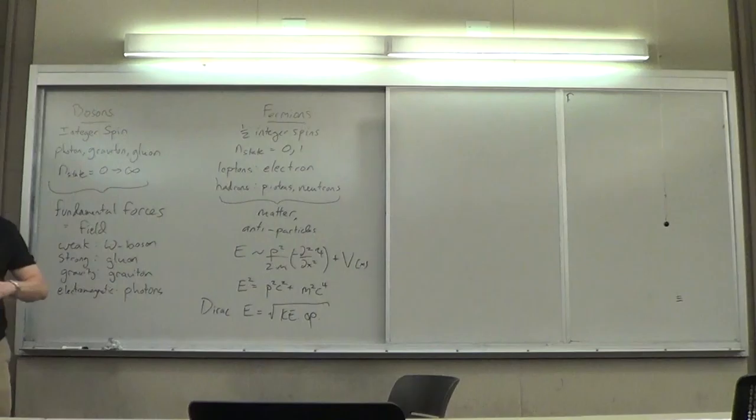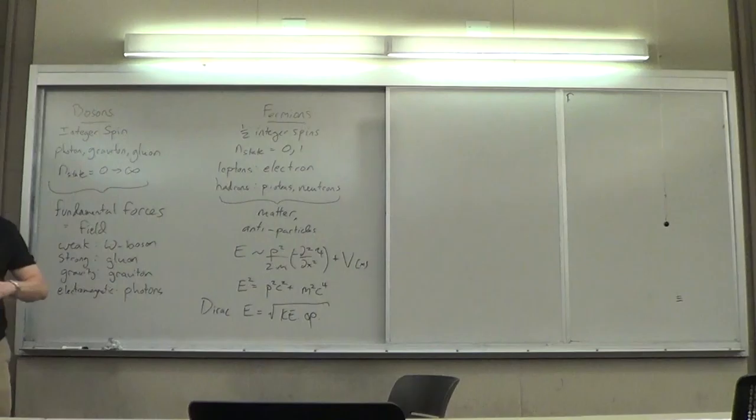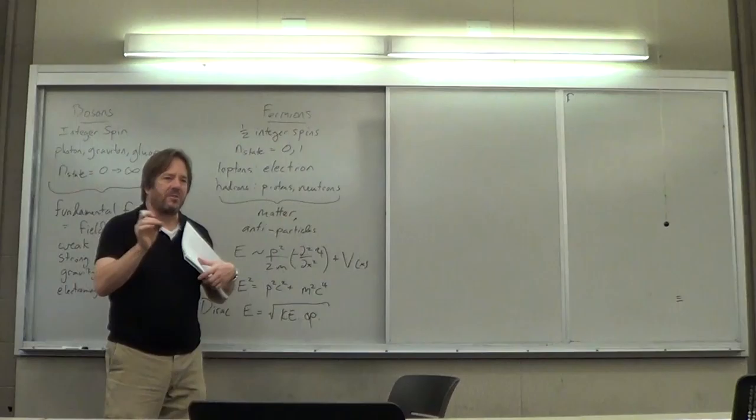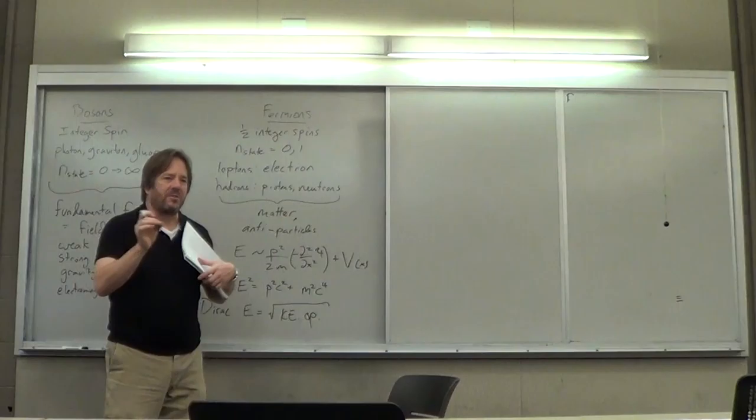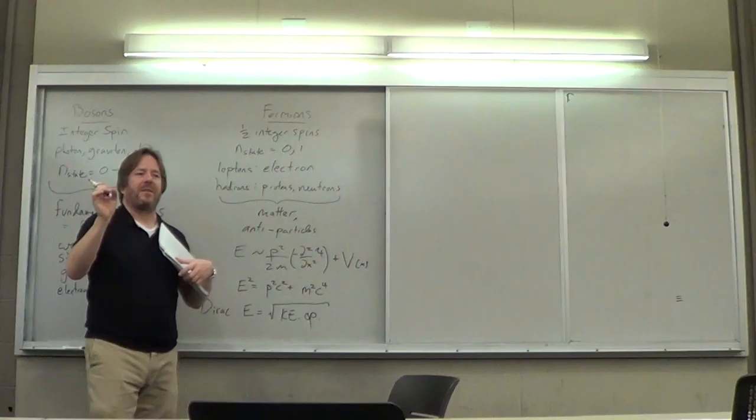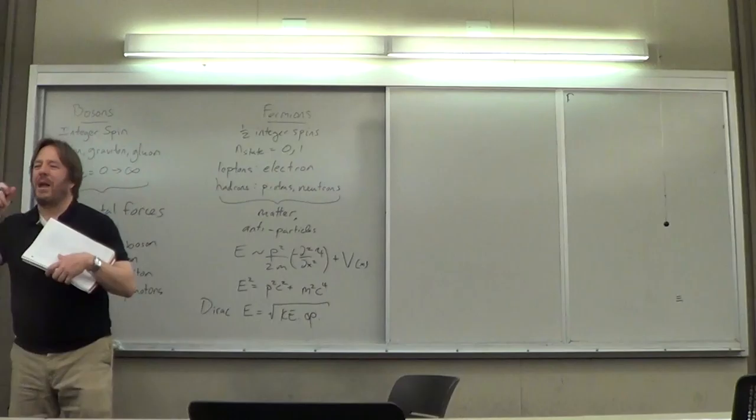Don't write this down — this is just for fun. String theory: we take the Dirac equation and treat electrons and protons as though they don't have any volume — we say they have a 1/r potential, treating them as point particles. String theory gives them volume. That's part of the point of string theory.